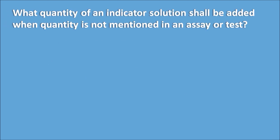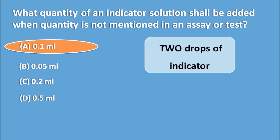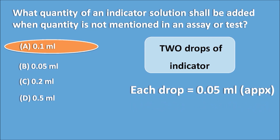Similarly, what quantity of an indicator solution shall be added when quantity is not mentioned in the SAR test? Options are A: 0.1 ml, B: 0.05 ml, C: 0.2 ml, and D: 0.5 ml. Whenever the quantity is not specified, two drops of the indicator — that is 0.1 ml — should be added, since each drop is approximately 0.05 ml.